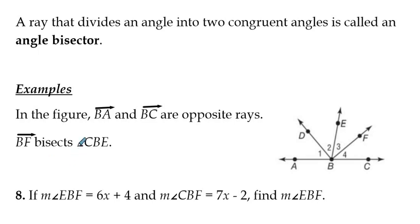A ray that divides an angle into two congruent angles is called an angle bisector. So if we have two angles that are congruent, say we have angle one and angle two, they're congruent. We just denote it that way. Pretty easy and self-explanatory.